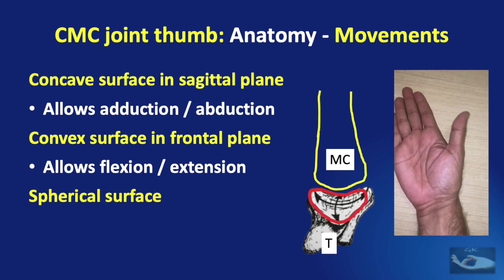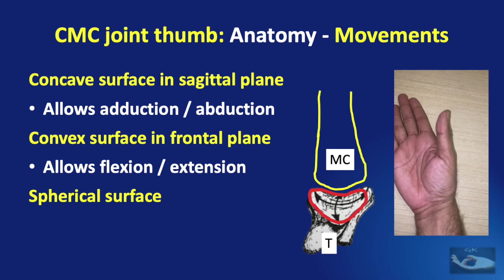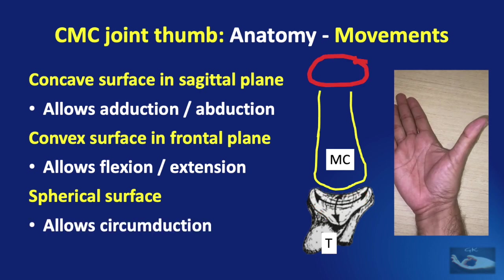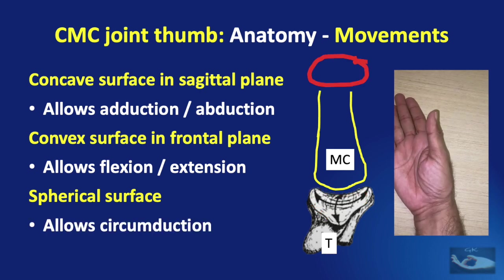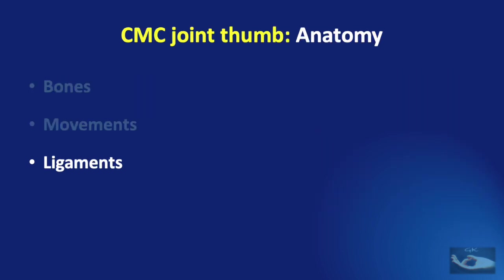The entire surface of the trapezium presents a spherical surface that allows circumduction movements of the thumb. Though the thumb has been provided with so much mobility, it is also important to provide stability so that it does not go off track. This stability is provided mainly by the ligaments.